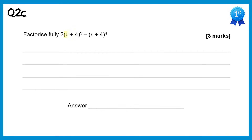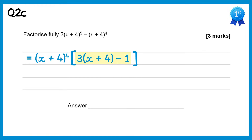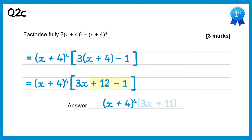In this question the bracket x plus 4 is repeated. We can factorise it out 4 times since the lowest power is to the power 4. To get 3 lots of x plus 4 to the power 5 we need to multiply by 3 and also one more of the brackets x plus 4, and to get negative x plus 4 to the power 4 we need to times by negative 1. Expanding inside the bracket gives 3x plus 12, and simplifying gives 3x plus 11. So the final answer is x plus 4 to the power 4 times 3x plus 11.